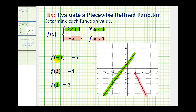Notice f of negative three equals negative five corresponds to this point here, where the coordinates are negative three, comma, negative five. f of two equals negative four corresponds to this point here, where the coordinates are two, comma, negative four.